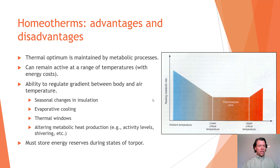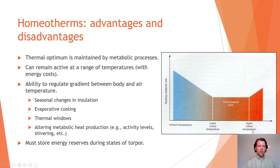Homeotherms regulate the gradient between their body and air temperature through seasonal changes in insulation, evaporative cooling, thermal windows — such as large ears in some mammals — and altering metabolic heat production. They may reduce activity during warm periods that cross the upper critical temperature and shiver at the lower critical temperature to maintain heat balance.